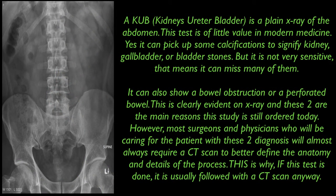Imaging studies. The KUB — kidneys, uterus, and bladder — is a plain x-ray of the abdomen. This test is of little value in modern medicine. It can pick up some calcifications to signify kidney, gallbladder, or bladder stones, but it is not a very sensitive test, meaning it can miss many of them. It can also show bowel obstruction or perforated bowel, and these two indications are the main reasons this study is still ordered today. However, most surgeons will almost always require a CT scan to better define the anatomy, so if this test is done, it is usually followed by a CT scan anyway.